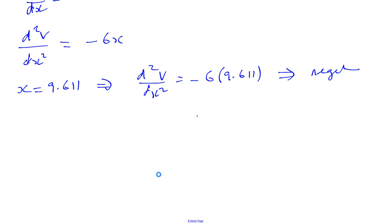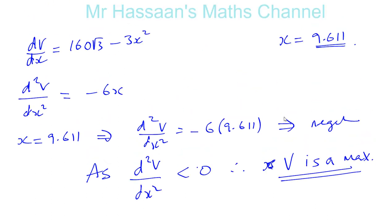Okay, so we can say as D squared V over D X squared is less than 0, therefore for this value of X, therefore the volume is a maximum for this value of X. Okay, the volume is a maximum. That's fine. Okay, as the second differential is less than 0, of course for this value of X that we used, the volume is a maximum for that value of X.